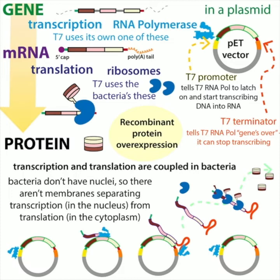That might sound really good — we call it overexpression — but timing is everything. Bacteria need to make their own proteins in order to grow and multiply. We need to think about bacterial growth when considering how much protein we're going to get. If you have a lot of bacterial cells making a lot of your protein, you'll get a lot of protein. But if you only have a few bacterial cells, even if they're making a lot of your protein, you won't get much. So you need to make sure the bacteria can still grow enough before you tell them to stop making their own proteins and switch to making almost entirely yours.